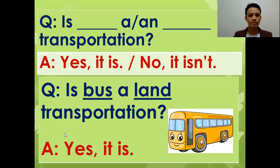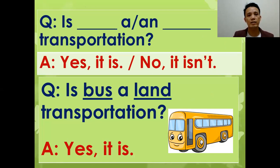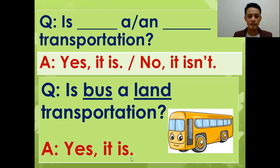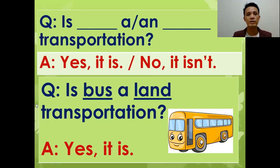Third structure: 'Is [vehicle] a [type] transportation?' Let's have an example: 'Is a bus a land transportation?' Answer: 'Yes, it is.' Or: 'Is an airplane a water transportation?' No — 'No, it isn't.' So those are the three structures for you to practice.